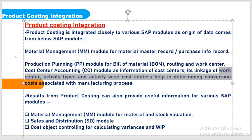Product costing is not an easy topic — it is somehow difficult because there are various manufacturing activity scenarios involved. We need to understand the business process at both the SAP CO level and the client level: how the manufacturing process is carried out, what are the material costs, labor costs, and other expenses involved. These are all things we should be aware of, and we should also know what product costing integration is.